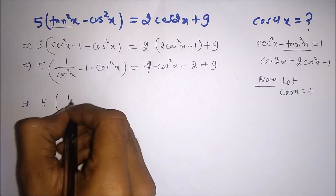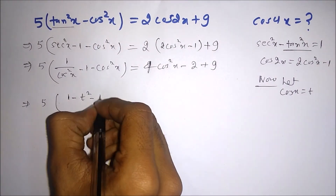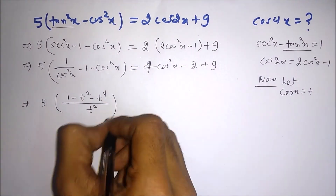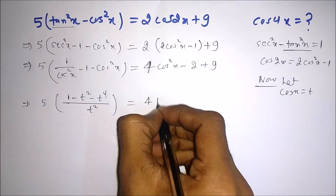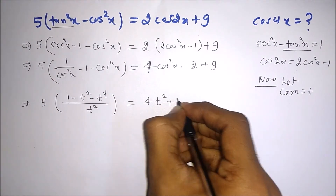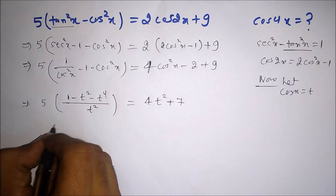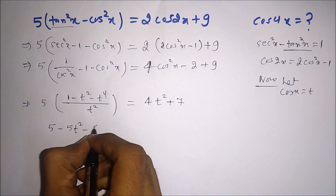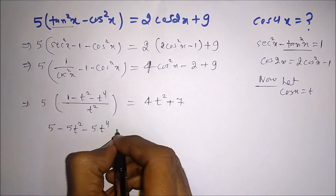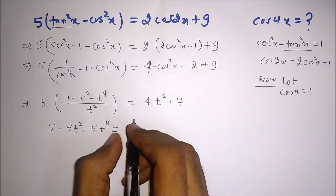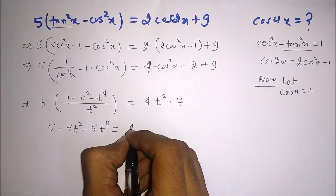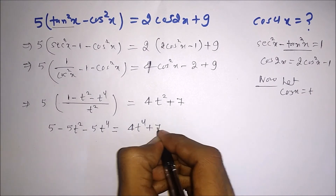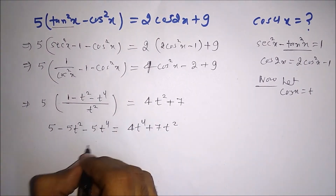Now let cosx = t. We can rewrite the equation as (1/t²) - 1 - t² = 4t² + 7. Cross-multiplying by t², we get 1 - t² - t⁴ = 4t⁴ + 7t². Rearranging: 5t⁴ + 8t² - ... collecting terms gives us a polynomial equation.